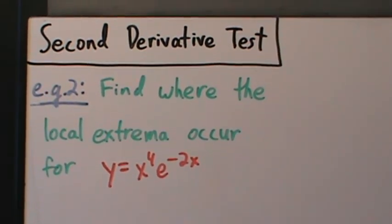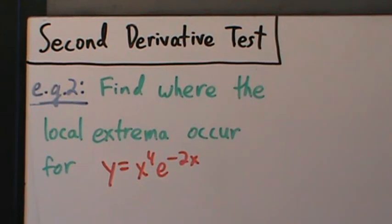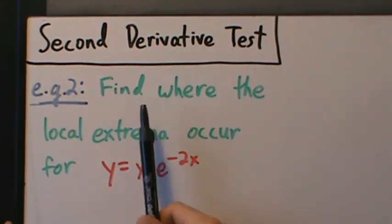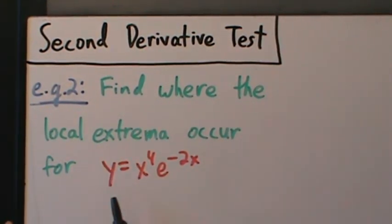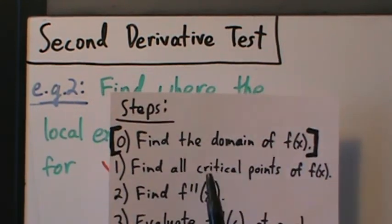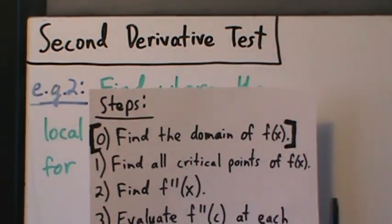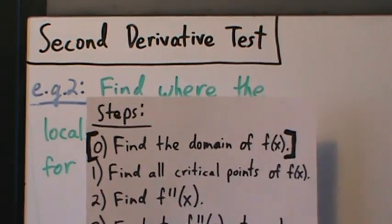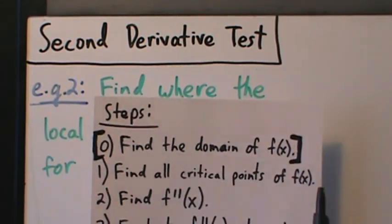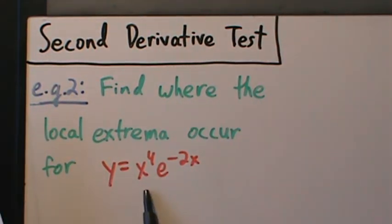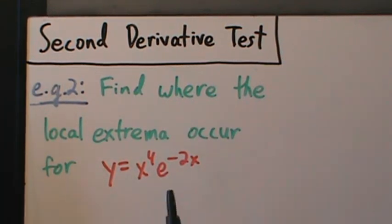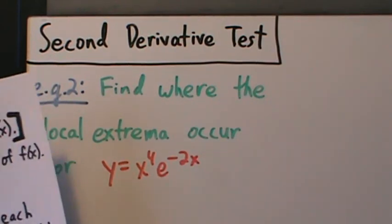Here's example two with the second derivative test. It's going to be a little more complicated than example one, but the same instructions: find where the local extrema occur for this function y equals x to the fourth times e to the negative 2x. Step zero — the domain: x to the fourth is a polynomial and e to the negative 2x is an exponential, so the domain is just all real numbers.